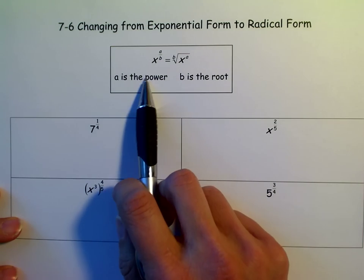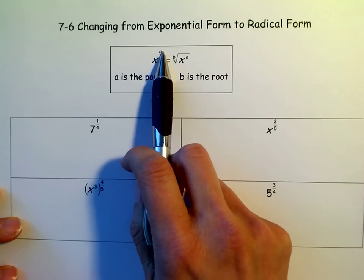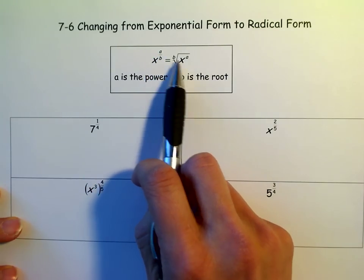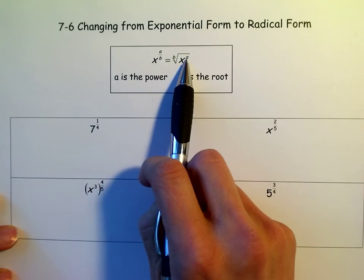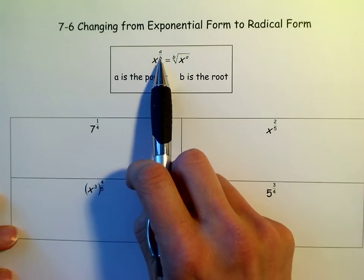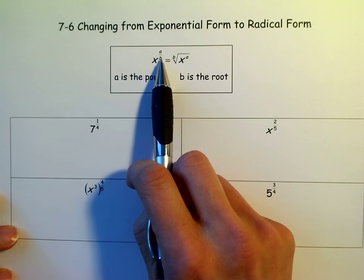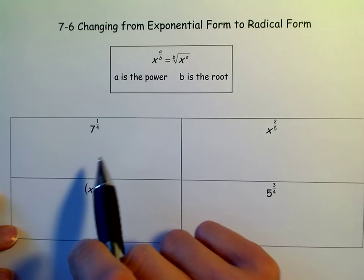Keep in mind what the top of the fraction and the bottom of the fraction do when you switch over to radical form. The numerator becomes the power on the variable or the number that you have, and the denominator becomes the index. If you keep that in mind, this is really easy.